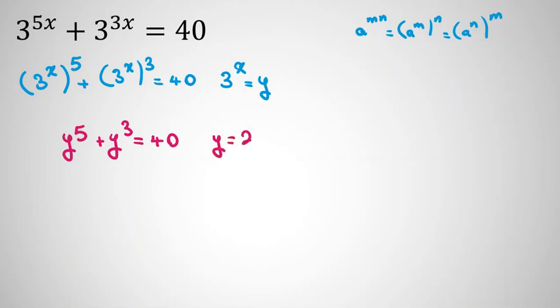We will see y equals 2 works, because 2 to the 5 plus 2 cubed is 32 plus 8, which is 40, and it works.